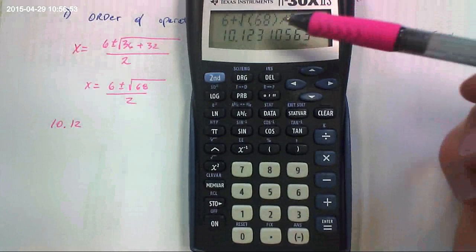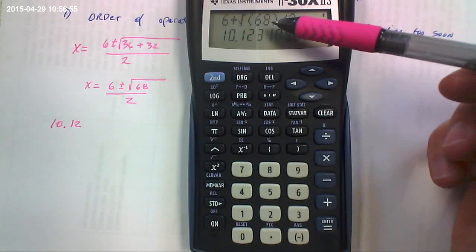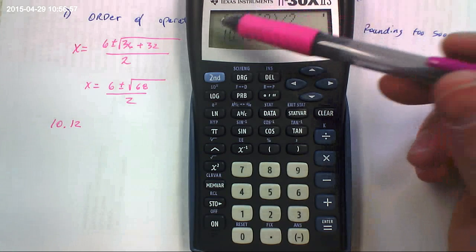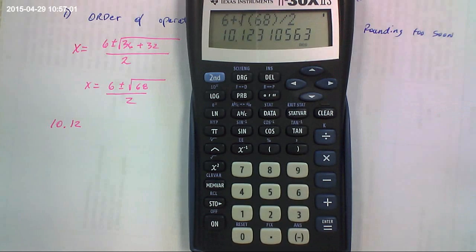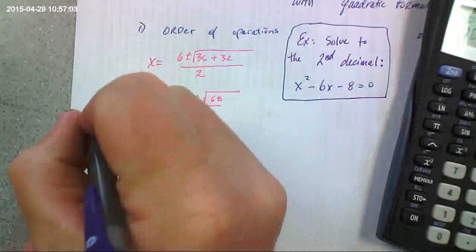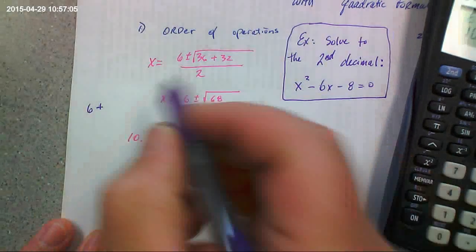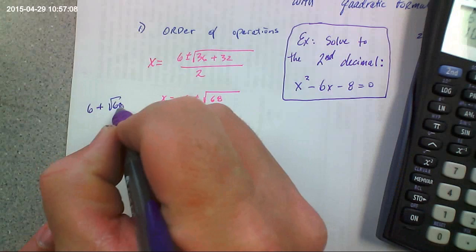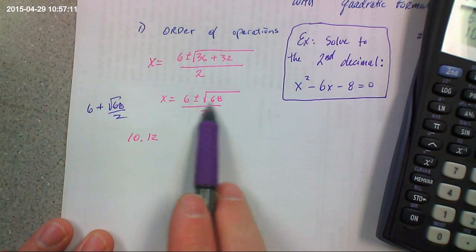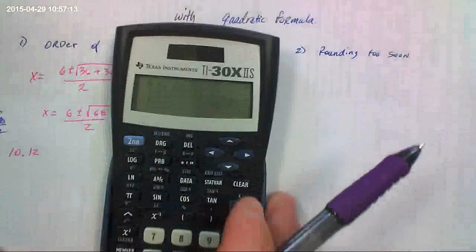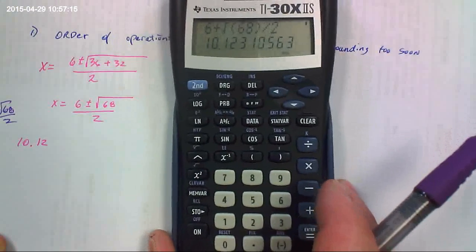The reason it's wrong is, if you look, the only thing that's being divided by 2 is the square root of 68, not the 6. See? So what I actually typed in right here was 6 plus the square root of 68 divided by 2, which is different. This numerator isn't a group. So somehow you have to account for that.